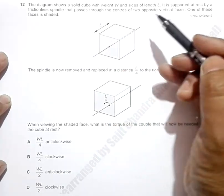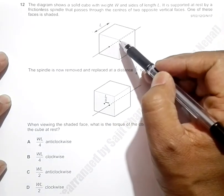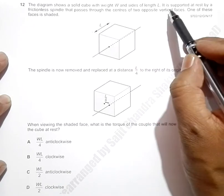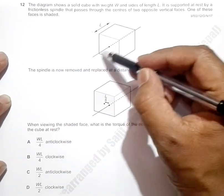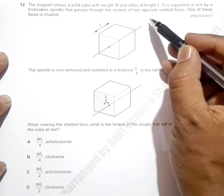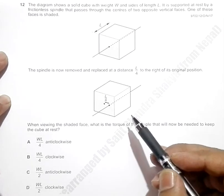of length L. Since it's a cube, it's supported at rest by a frictionless spindle that passes through the centers of two opposite vertical faces. One of these faces